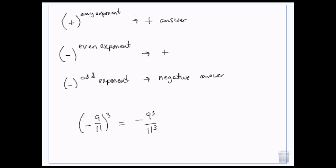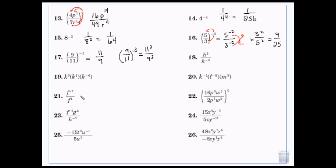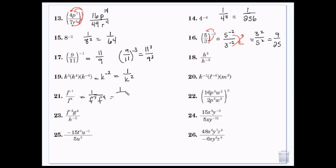Going back: k to the zero, k to the fourth, k to the sixth — they're added. 4 plus 0 is 4, plus negative 6 is negative 2. And here I have f to the 7th, negative 7, f to the 4th. The negative 7 has to go downstairs because I'm not allowed to have a negative 7 upstairs. Then I'll add the positive numbers to get 11.